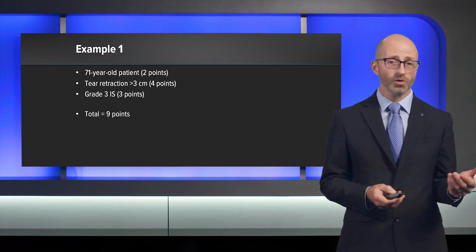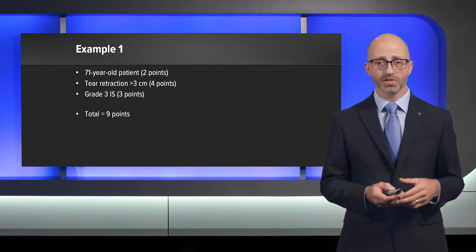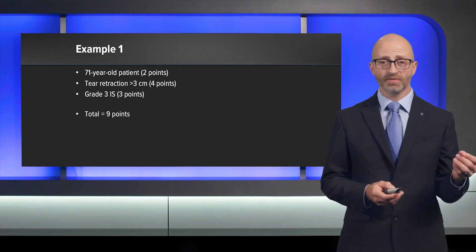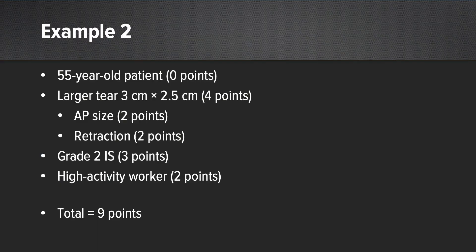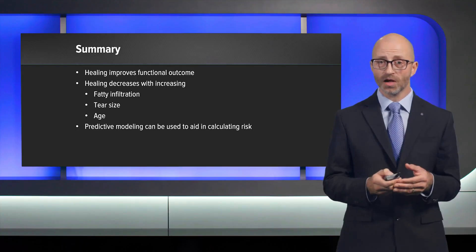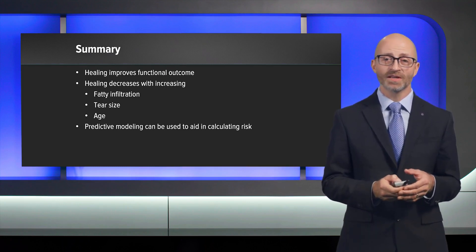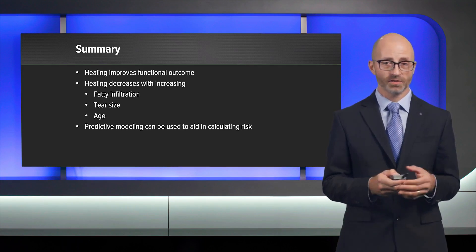Looking at case examples: a 71-year-old patient earns 2 points for age, plus 4 points for tear retraction greater than 3 centimeters, plus 3 points for infraspinatus infiltration grade 3 — totaling 9 points, predicting less than 30% chance of healing. A 55-year-old with a 3 by 2.5 centimeter tear earns 4 points for tear size and retraction, 3 points for grade 2 fat infiltration, and if a high-activity worker, totals 9 points — less than 30% chance of healing. In a young patient like this, you would want to do everything possible to achieve healing. In summary: healing improves functional outcome and decreases with increasing fat infiltration, tear size, and age. Predictive modeling can aid in calculating the risk.